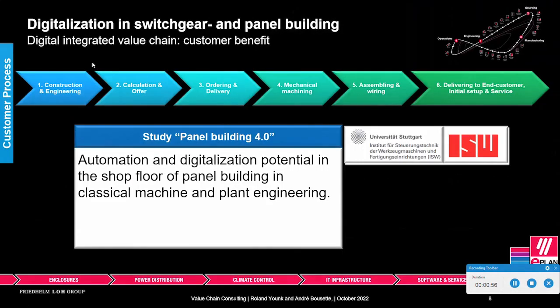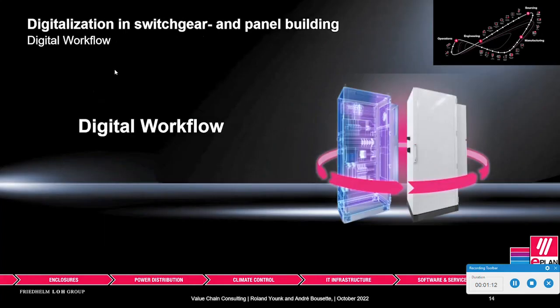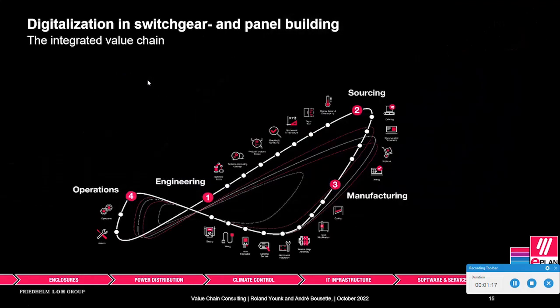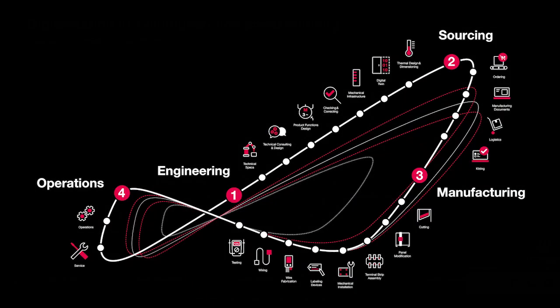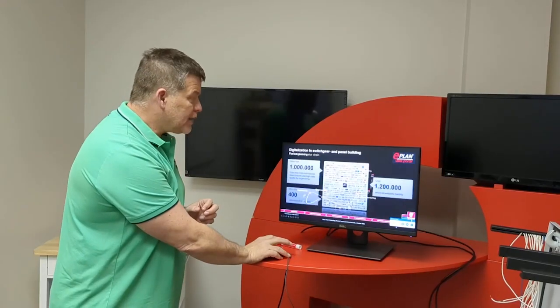Let's take a look a little bit deeper into a study from the University of Stuttgart. They took all the steps that any electrical engineer and manufacturing company undergoes, dissected it, and we organized it from a digital perspective. We think about the digital workflow — any data that goes into engineering has to service the sourcing, manufacturing, and operations. The idea is anything you put into this loop has to service the next person. This is really the value chain.